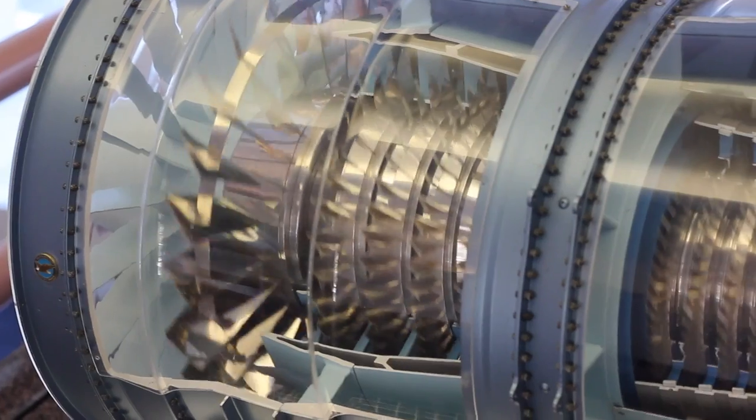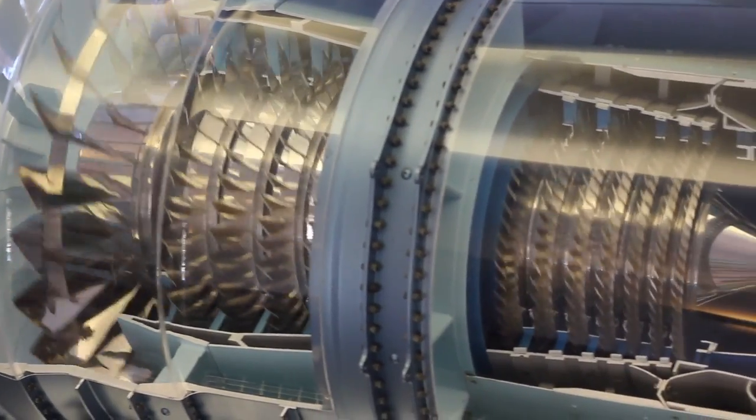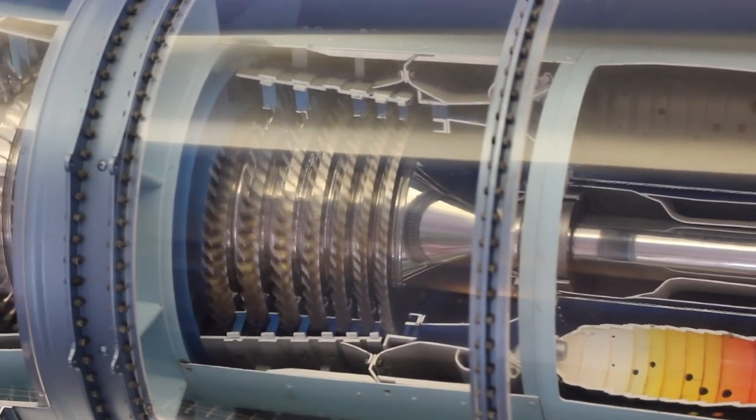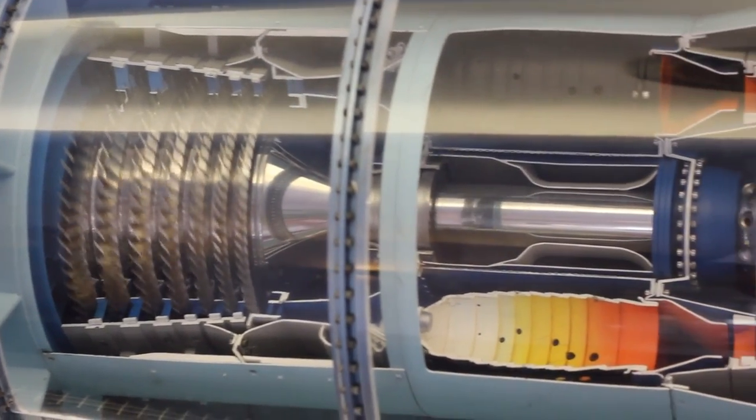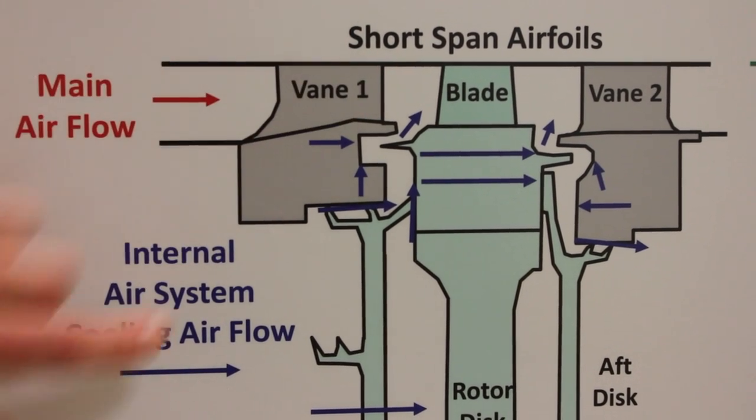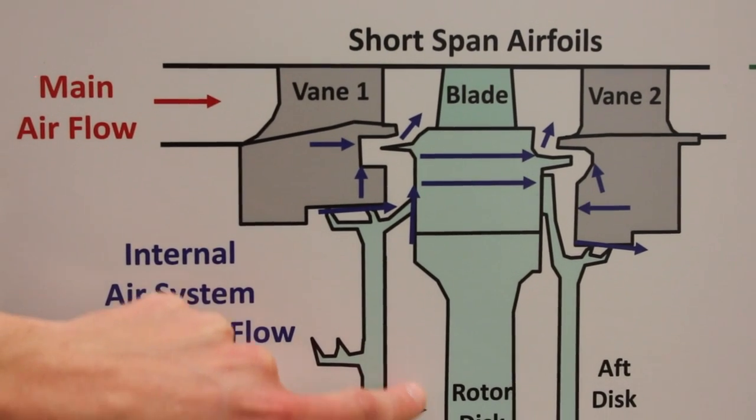We're looking at sealing effectiveness in rim seals. A jet engine is composed of multiple rotating and stationary parts, and so you can't have those rubbing together, but you need to prevent the hot main gases, combusted gases, from going into these spaces and heating up components to dangerously high levels, which can have catastrophic effects.